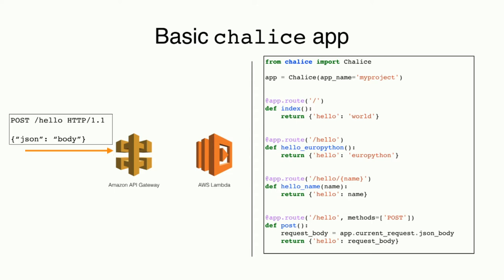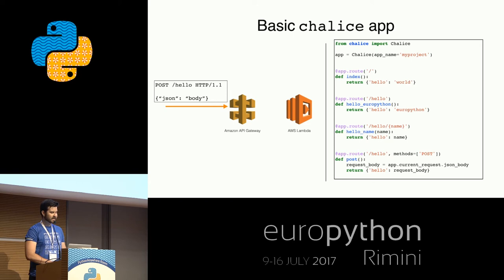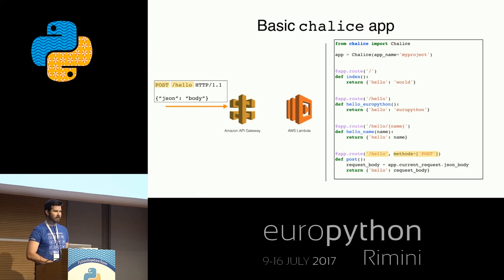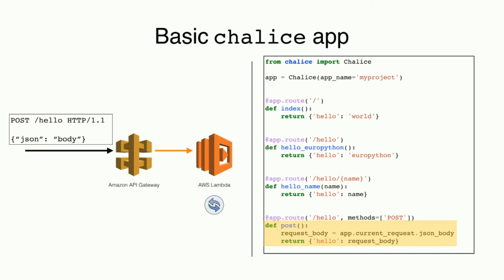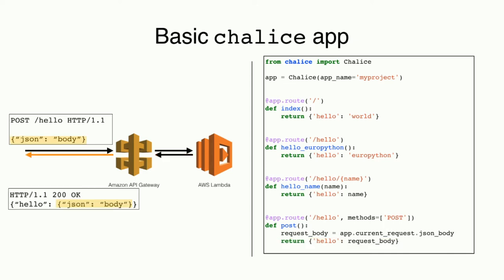For the POST, you'll notice it uses the /hello resource but a different function — that's because the route only allows POST when you use the methods keyword argument. By default, if you don't specify methods, it only allows GET. So Amazon API Gateway invokes the Lambda function with the post handler. Inside the post function, we use app.current_request, which refers to the HTTP request that triggered the Lambda function, allowing you to get properties like the JSON body.